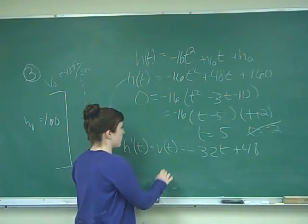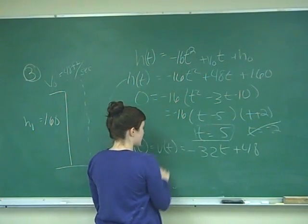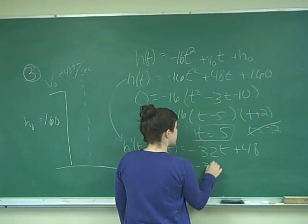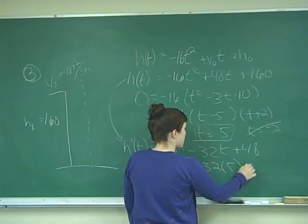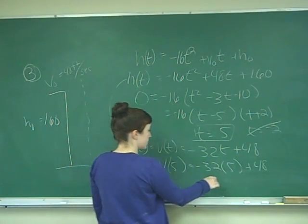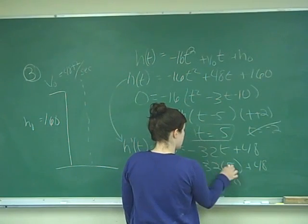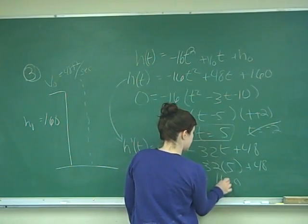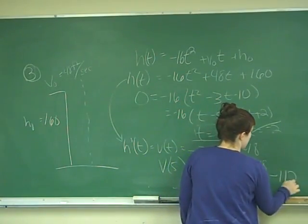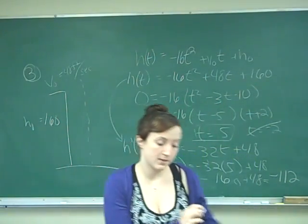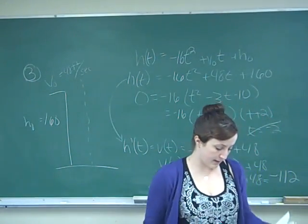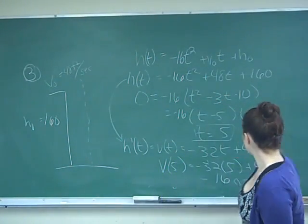All right. And so now we know that we're looking for when t is 5, so we're going to have v of 5. That will be negative 32 times 5 plus 48. Negative 32 times 5 is negative 160 plus 48 will give me negative 112. And if I look at my values and my possible answers, that is answer A.